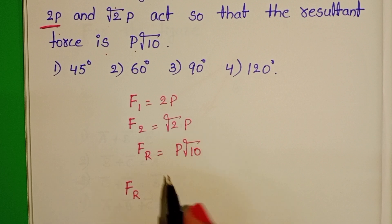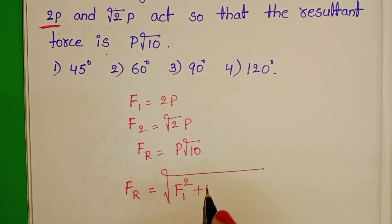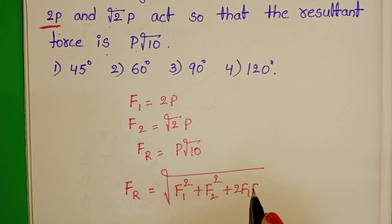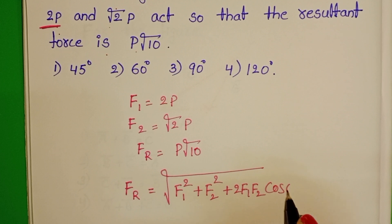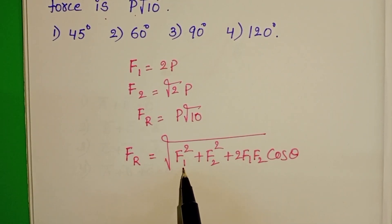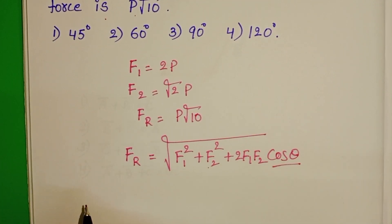Resultant of two forces equals square root of F1 square plus F2 square plus 2F1F2 cos theta. We know the resultant and also F1 and F2. Substitute here and find out the angle between the two forces.